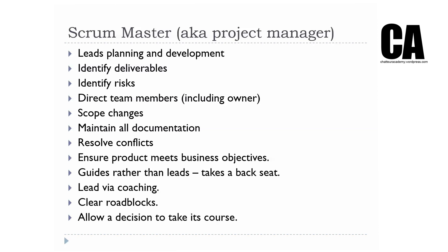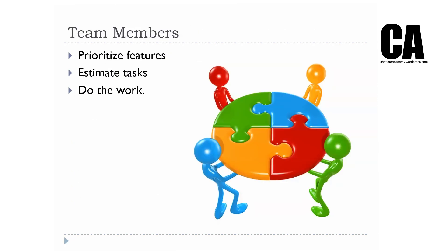The scrum master scopes any changes, maintains all documentation, resolves conflicts, ensures the project meets business objectives, and guides rather than leads — they take a back seat and lead via coaching. They clear roadblocks and, crucially, they allow a decision to take its course. If the team has decided to do something, the scrum master can advise but must let it run its course so people can learn from their experiences. The team members themselves are the most important people — they work out the priority of the feature list because they are the domain experts.